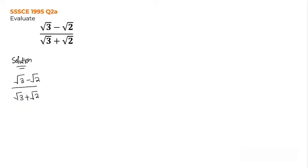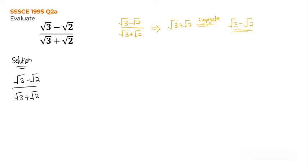So if it is positive, you change it to negative; if it is negative, you change it to positive — and you use it to multiply both the top and bottom. In our case, we have root 3 minus root 2 over root 3 plus root 2, so the denominator is root 3 plus root 2. The conjugate for root 3 plus root 2 will be root 3 minus root 2.